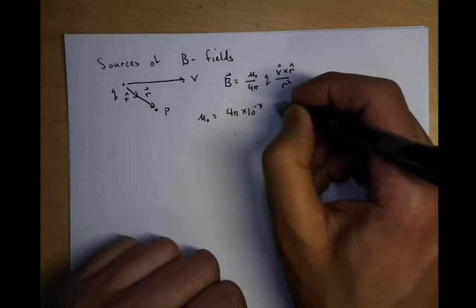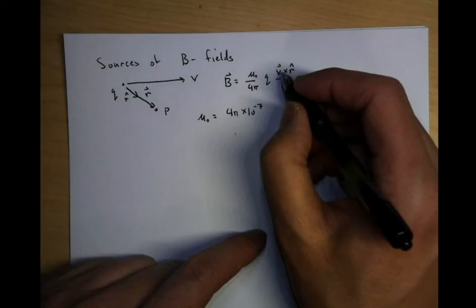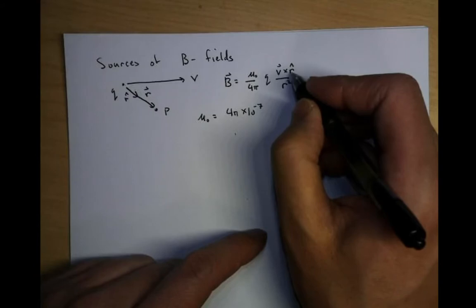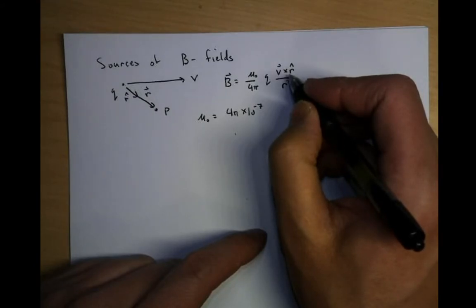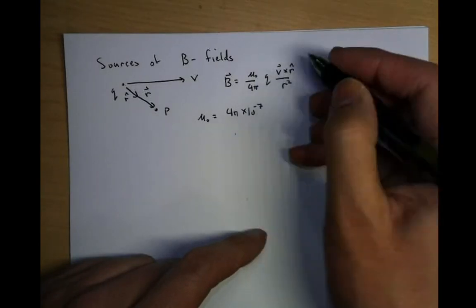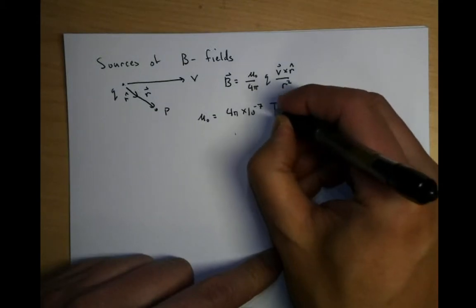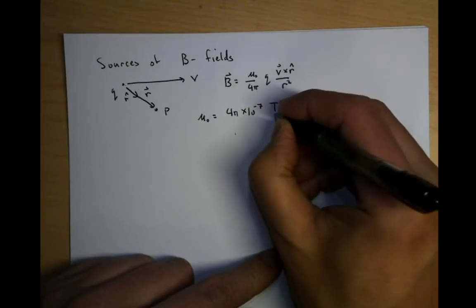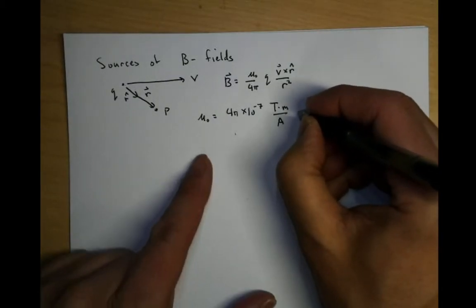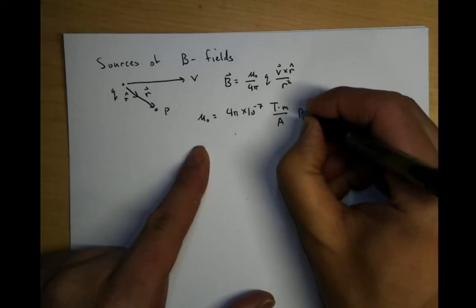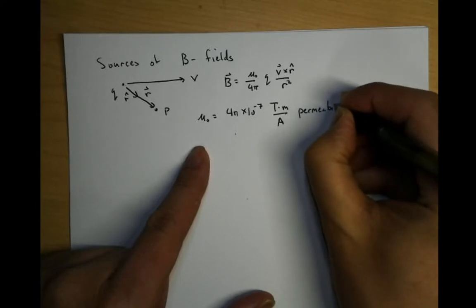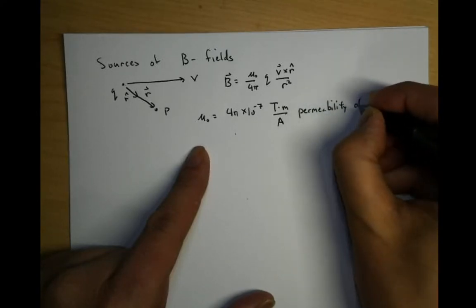Let's get the units right. Q times V is going to be a current, so that's an amp. This is meters here and meters over here. So this unit is going to be Tesla meters over amperes. This value mu zero is called the permeability of free space.